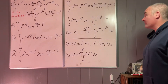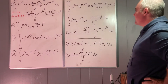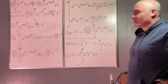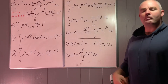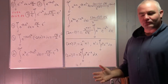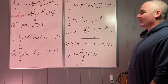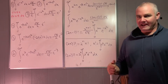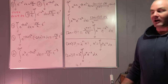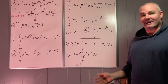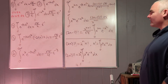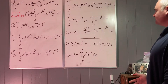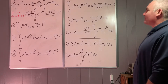Hi everybody, welcome back to another video on Feynman integration. Today we're going to be developing an integral representation for the double factorials. The double factorials are kind of like the regular factorial — n times n minus 1 times n minus 2 and so on — but they are actually two separate functions. There is the even double factorial, like 8 times 6 times 4 times 2, and the odd double factorial, like 9 times 7 times 5 times 3. They're different, and as far as I know there's not a unified function for both of them.